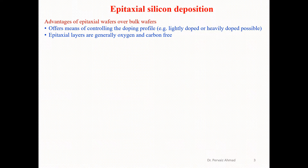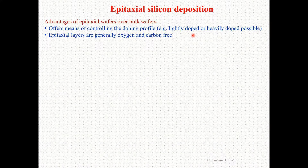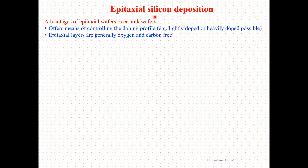Epitaxial silicon deposition has advantages over epitaxial wafers or bulk wafers. This technique offers a means of controlling the doping profiles — for example, we can have lightly doped or heavily doped materials. Similarly, by utilizing this technique we can have epitaxial layers that are generally oxygen and carbon free.